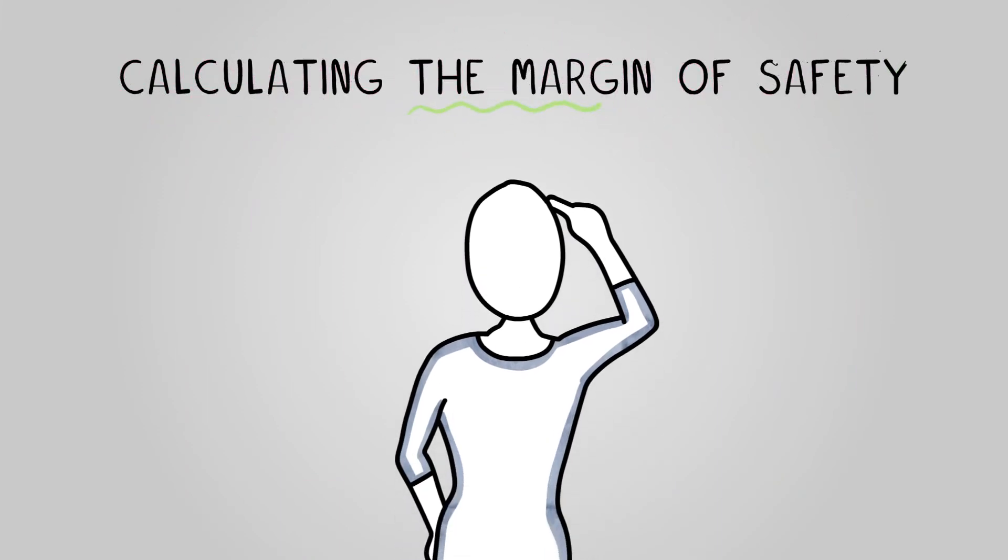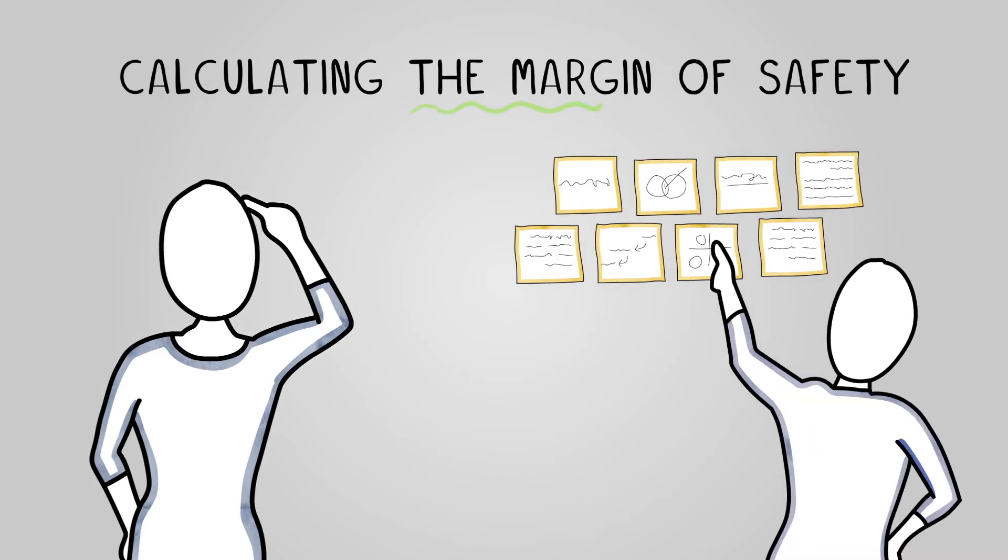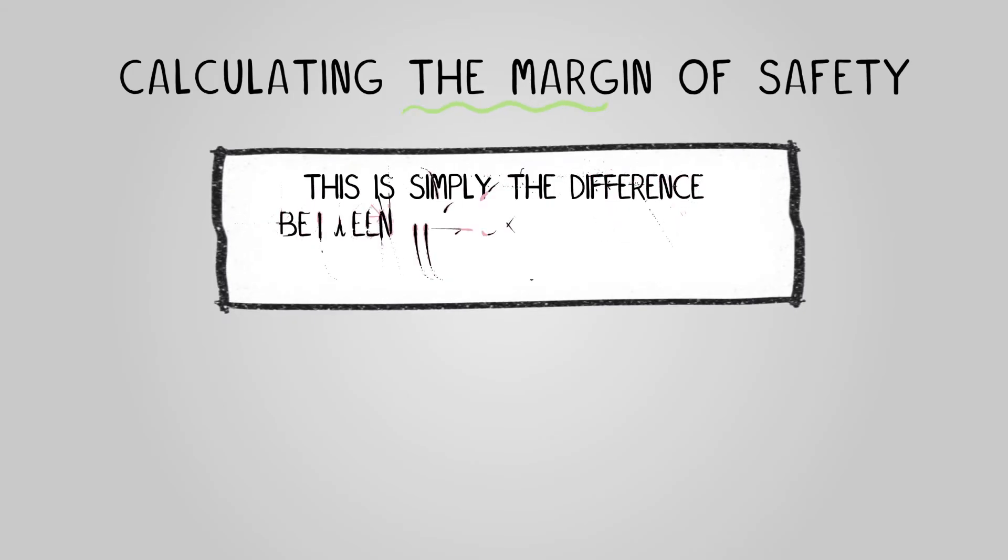While understanding the break-even point is essential, it's not foolproof. For example, it assumes that all units are sold and presumes the economic environment and forecasts are 100% reliable, which they rarely are. For this reason, many businesses work out a margin of safety.